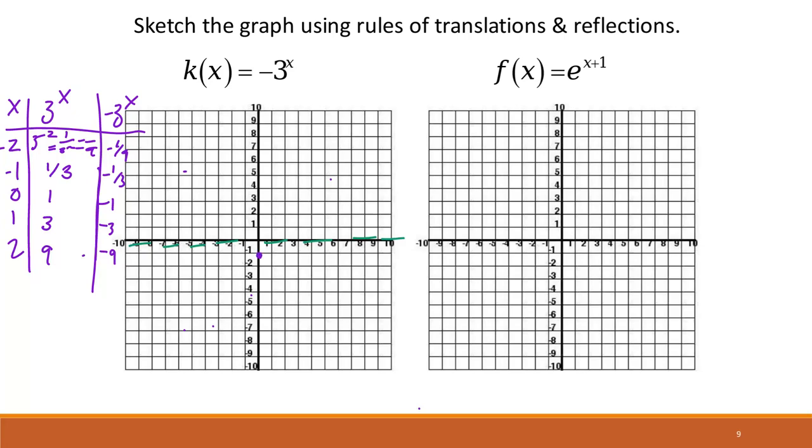I'm going to plot 1, negative 3, and 2, negative 9, right? And then we know that curve is getting closer and closer to that asymptote right there.